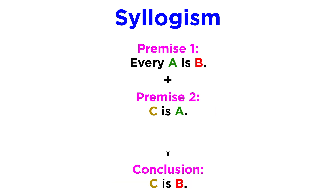Every A is B; C is A; therefore C is B. This is a valid argument and a valid inference, since it's simply formulaic, in that if both premises are correct, the conclusion will also necessarily be correct.